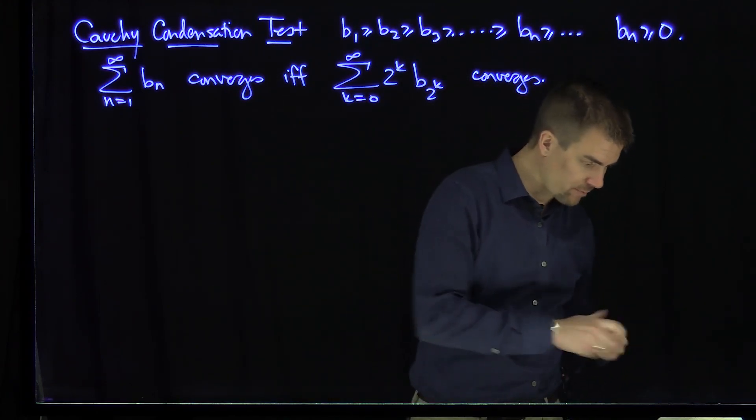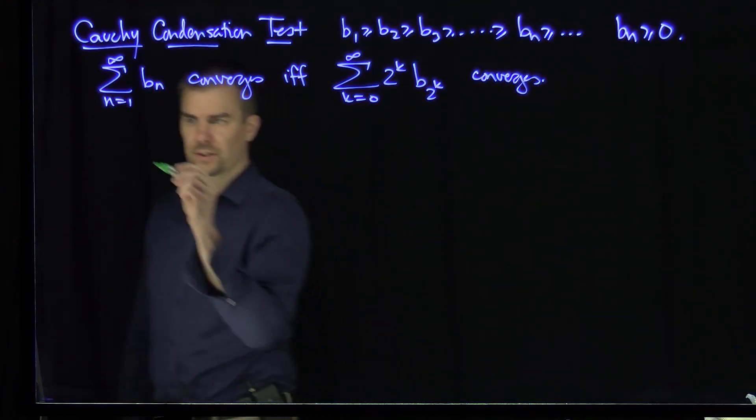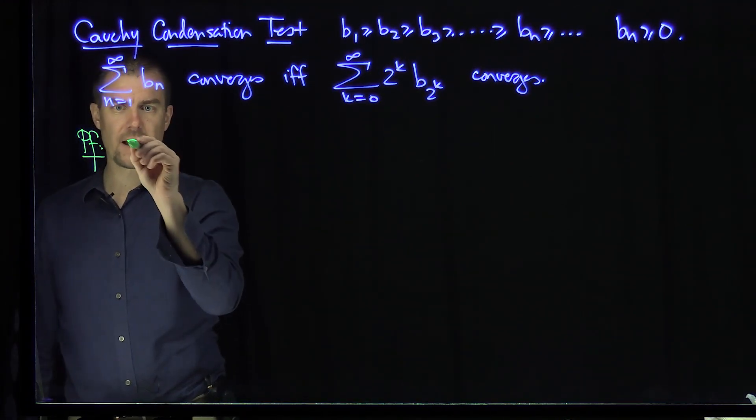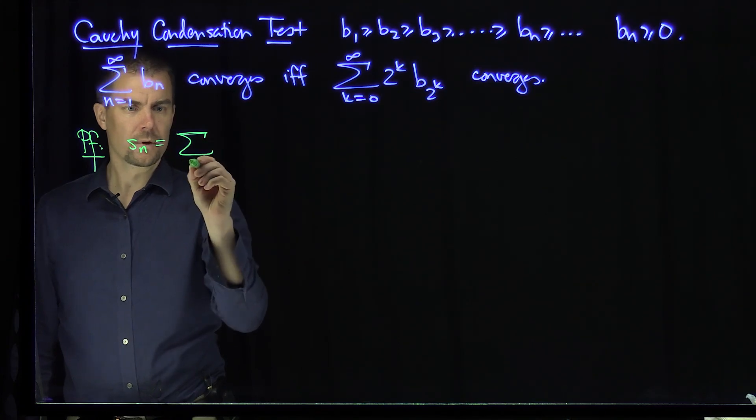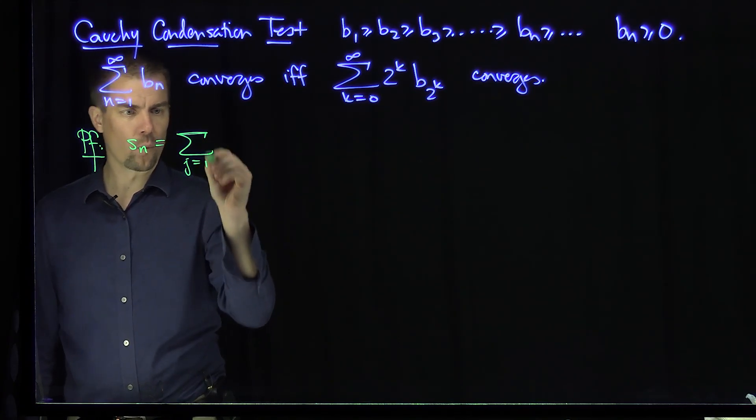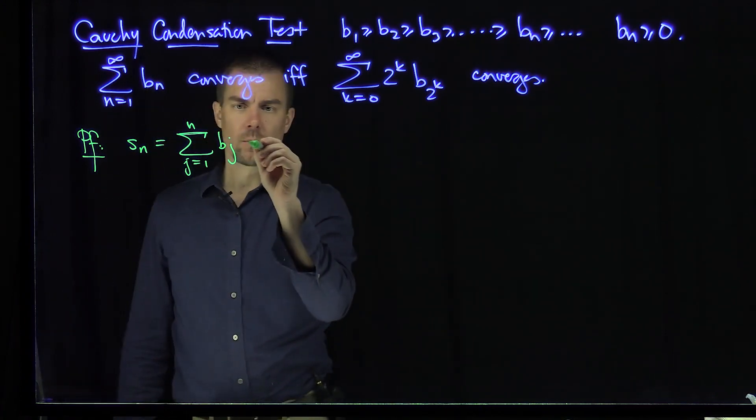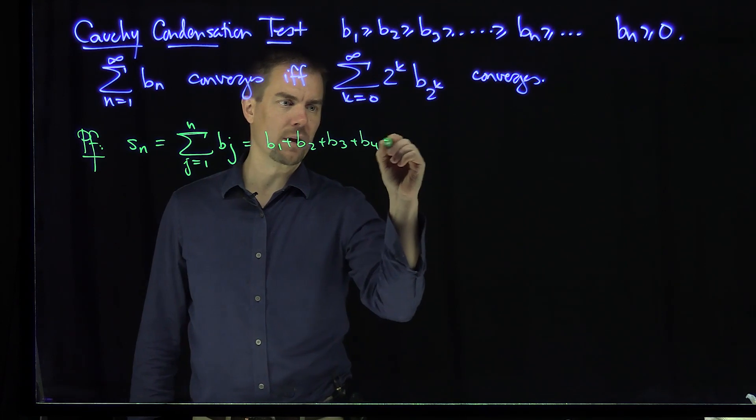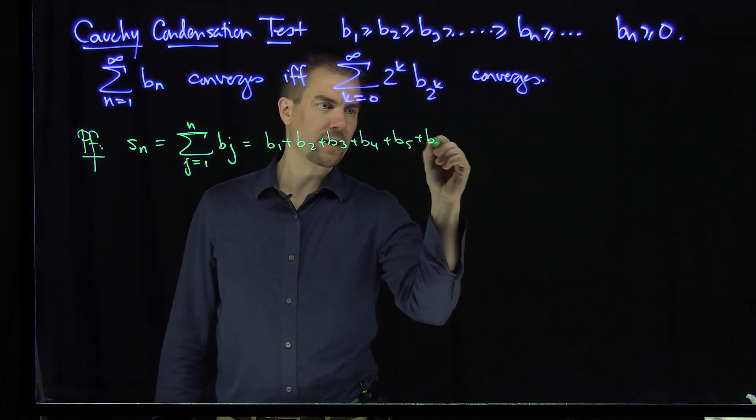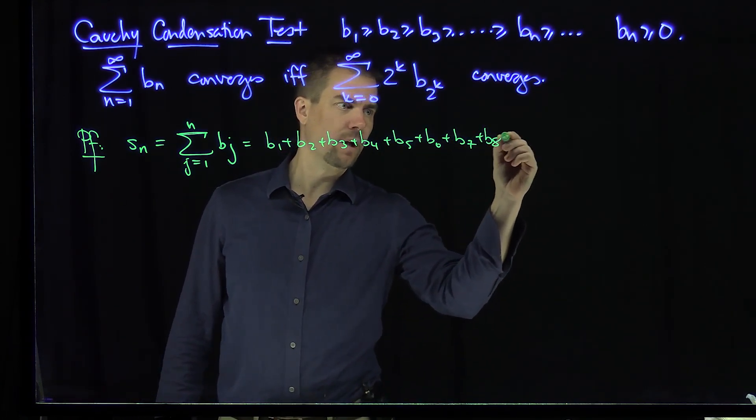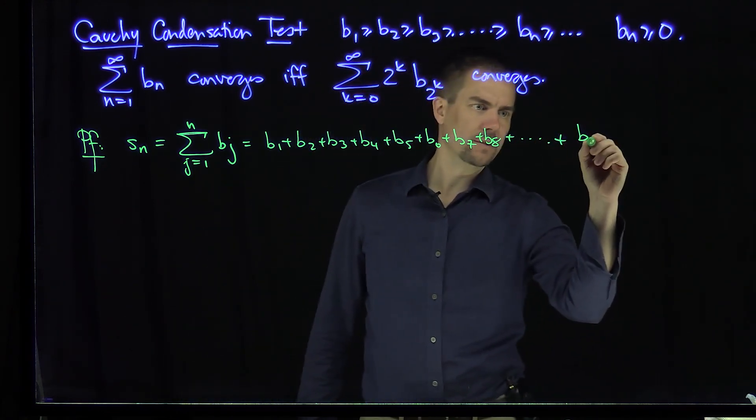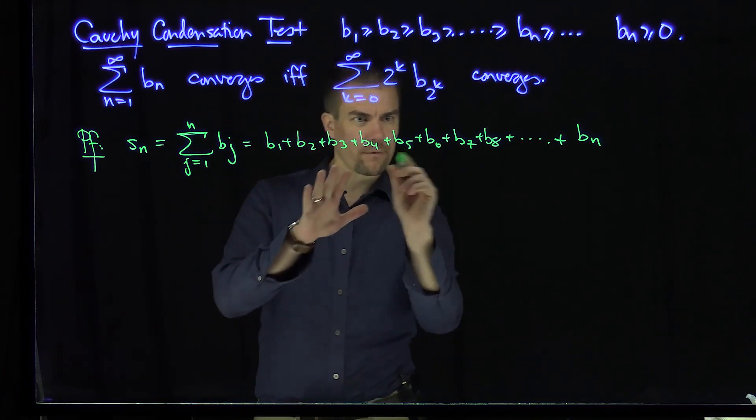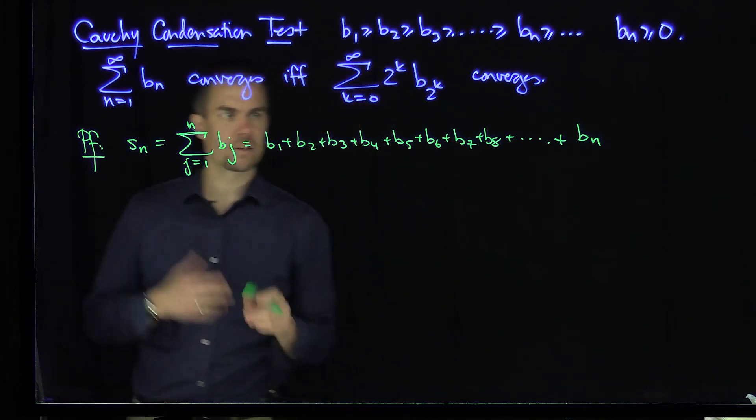So we're going to look at two sets of partial sums. Here's the proof. We're going to consider Sn to be the sum from j equals 1 to n of Bj, which will be B1 plus B2 plus B3 plus B4 plus B5 plus B6 plus B7 plus B8 all the way down to B sub n. And what I want to do is use the first couple to see what the pattern looks like in terms of the proof.